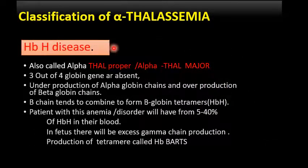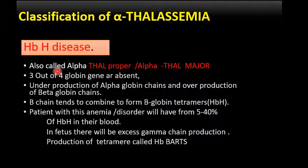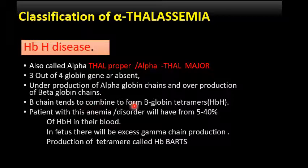HbH disease is proper alpha thalassemia, also known as alpha thalassemia major. In its pathophysiology, three out of four globin genes are absent, leading to underproduction of alpha globin chains and overproduction of beta globin chains. The excess beta chains tend to combine to form beta globin tetramers. Similarly, excess gamma chains also form tetramers known as HbH.